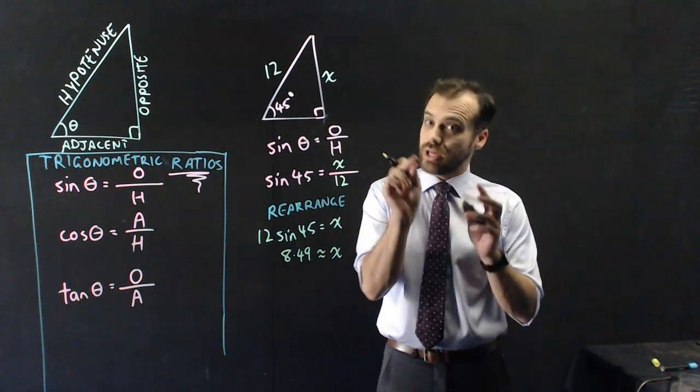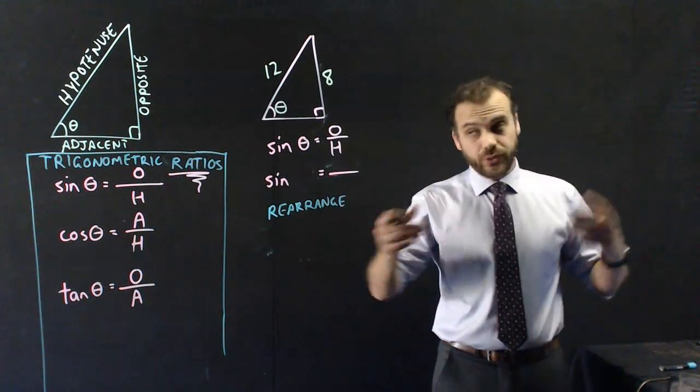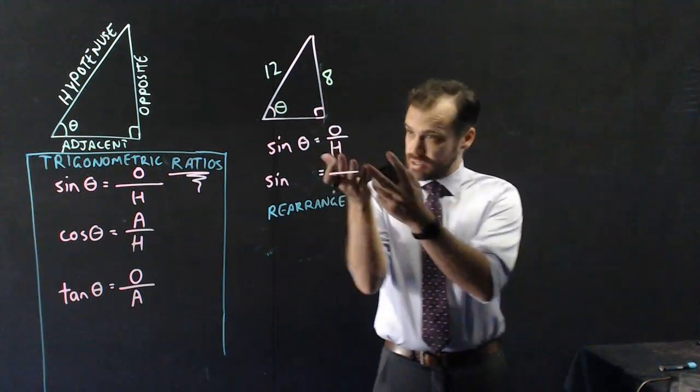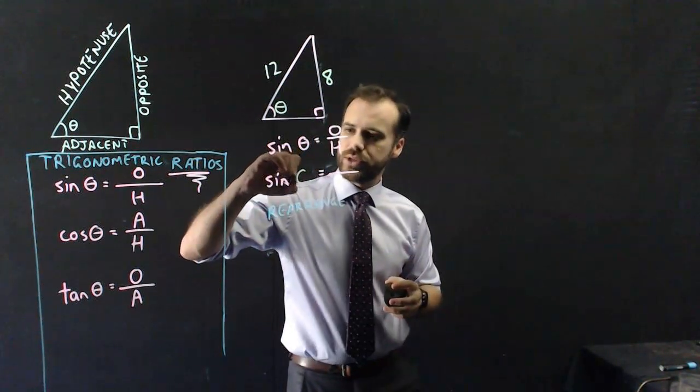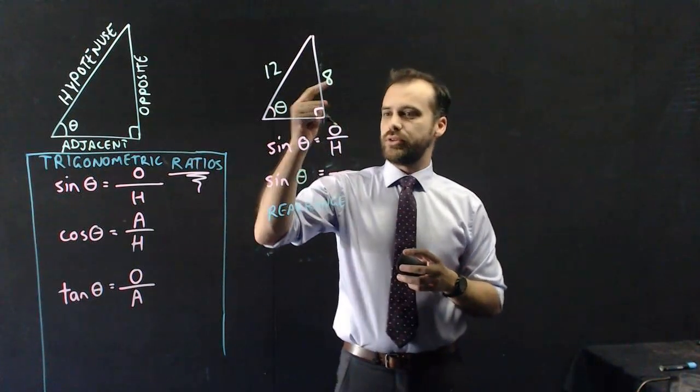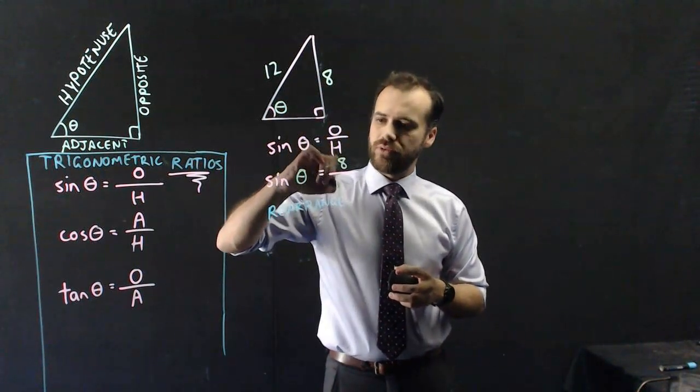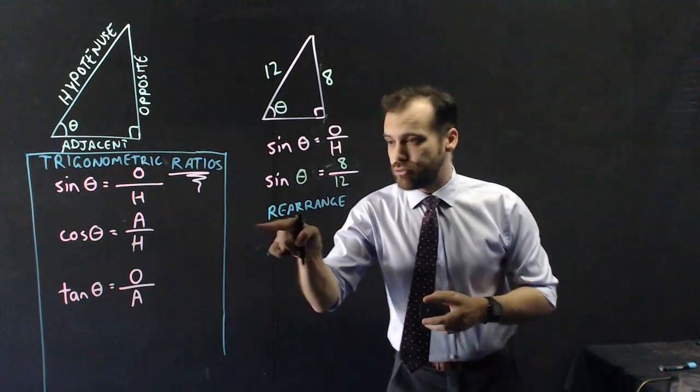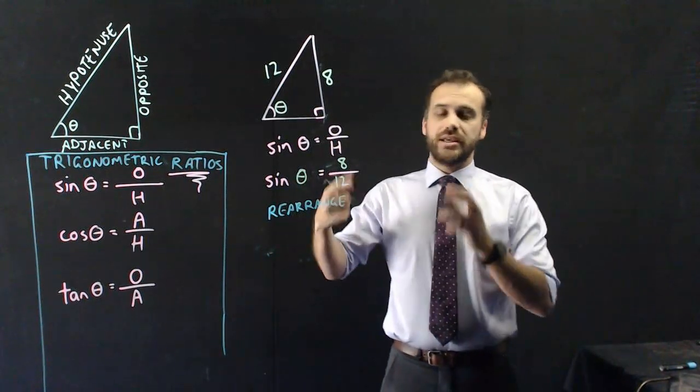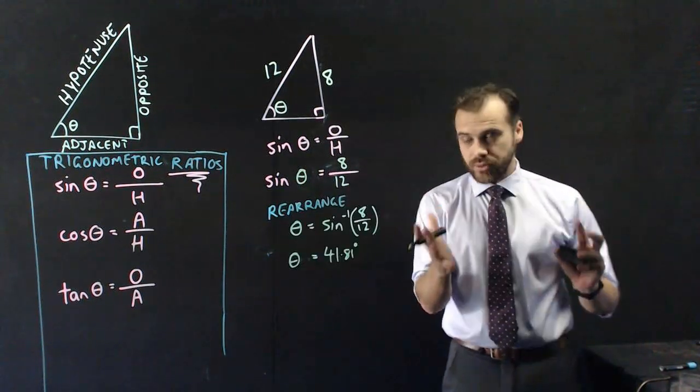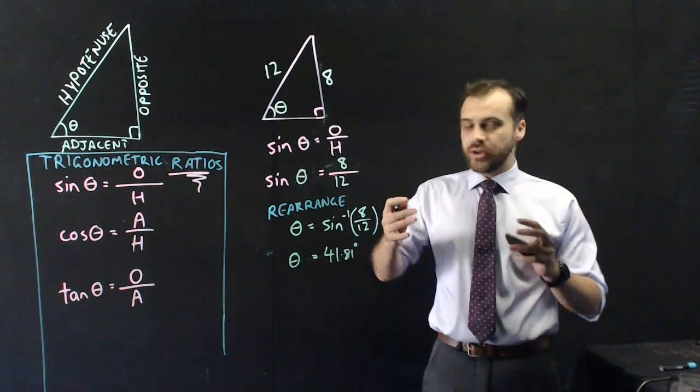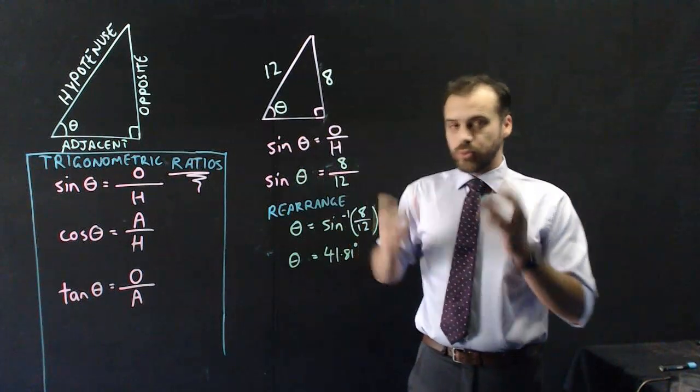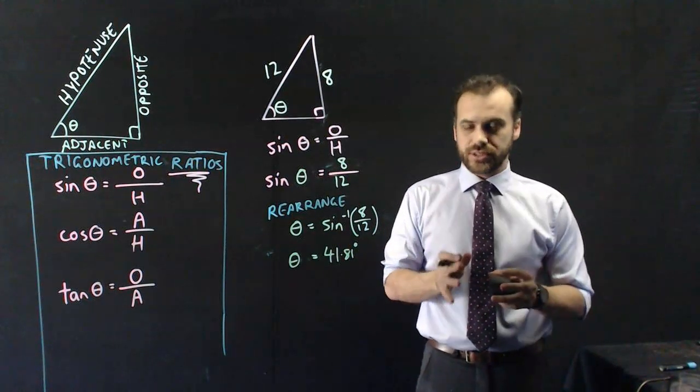So why am I saying this is useless? Consider if your triangle looked just a little more different. Imagine if we didn't know the angle. We can still use the same formula because it's opposite and hypotenuse, but this time we don't know the angle and we know that the opposite is 8 and that's 12. Then we need to rearrange by taking inverse sine. And now we have an angle of 41.81 degrees and again, I've found an answer, it works.